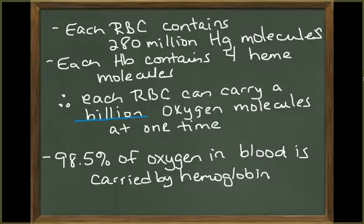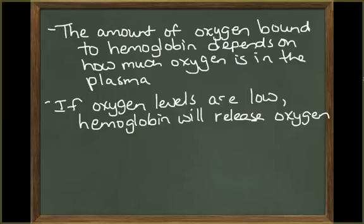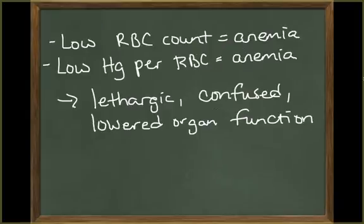About 98.5% of the oxygen carried by the blood travels through the bloodstream bound to hemoglobin inside the red blood cells. The amount of oxygen bound to hemoglobin depends on the oxygen content of the plasma. If oxygen levels are low, hemoglobin will release oxygen. If a person has a low red blood cell count,